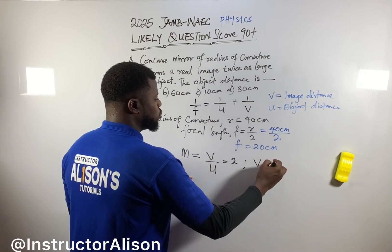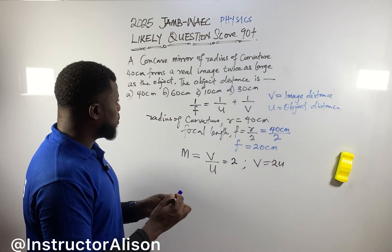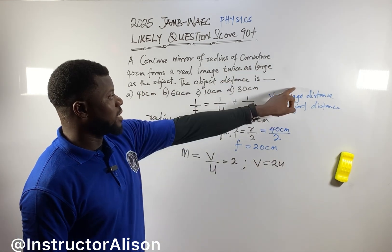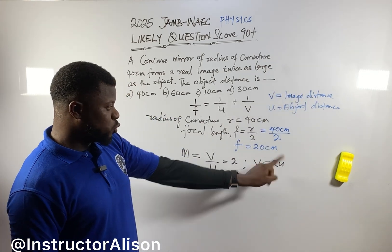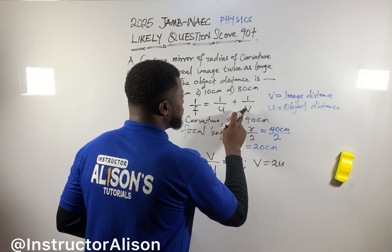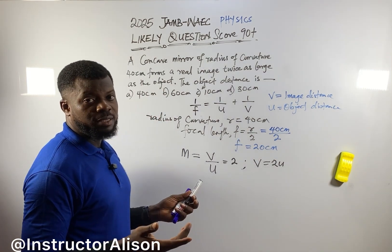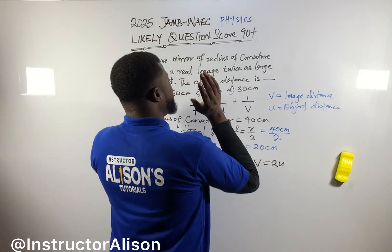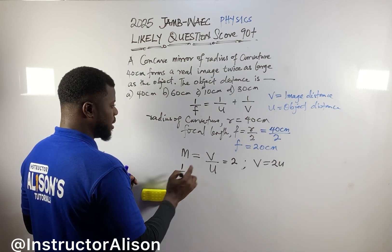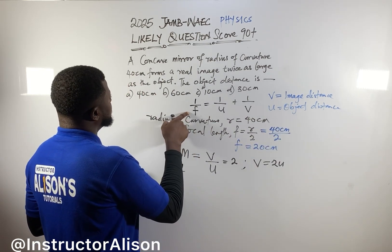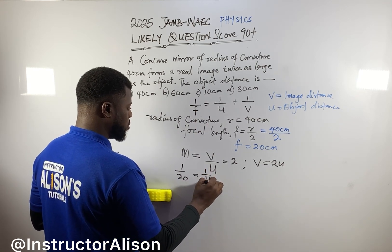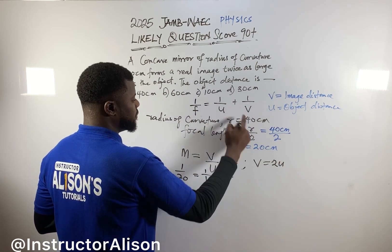So you can see that since the real image is twice as large as the object, image distance v equals 2u. Now carry everything into the original mirror formula. We have 1 over f equals 1 over u plus 1 over v. Since f is 20, and v is 2u: 1 over 20 equals 1 over u plus 1 over 2u.